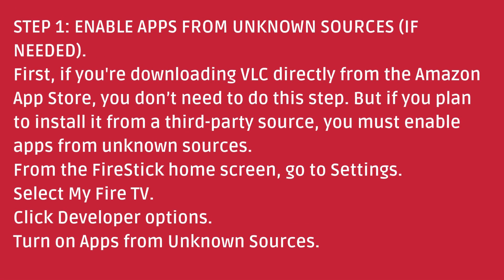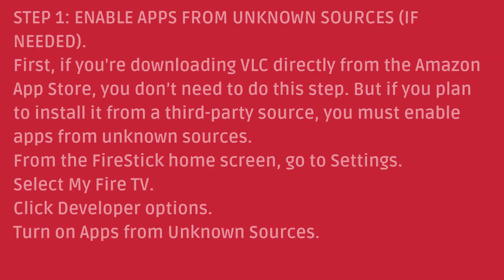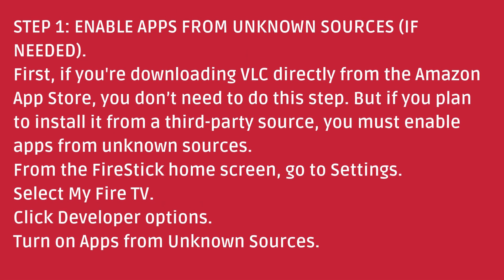Step 1: Enable apps from unknown sources if needed. First, if you're downloading VLC directly from the Amazon App Store, you don't need to do this step. But if you plan to install it from a third-party source, you must enable apps from unknown sources. From the Fire Stick home screen, go to Settings, select My Fire TV, click Developer Options, and turn on apps from unknown sources.